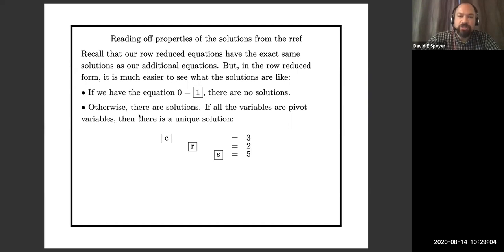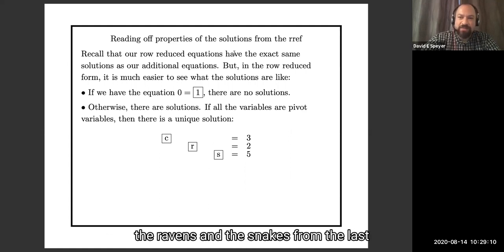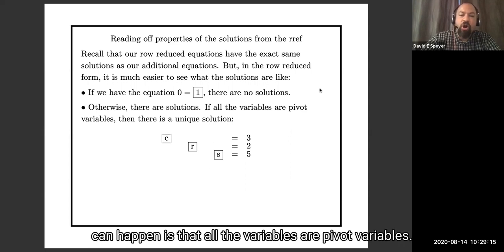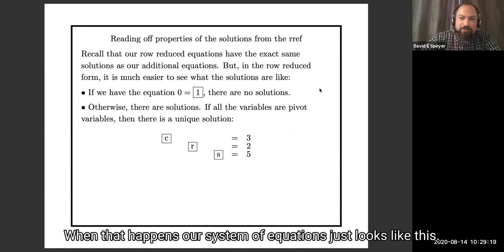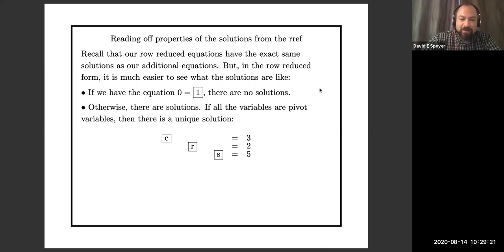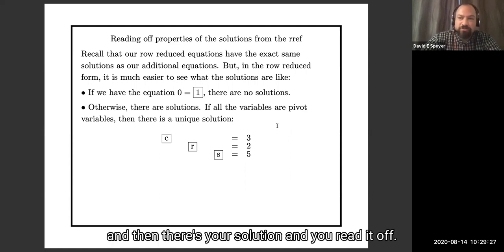Otherwise, there are solutions. Now, the simplest thing that can happen, and what happened with my example of the cats, the ravens, and the snakes from the last lecture, is the simplest thing that can happen is that all the variables are pivot variables. When that happens, our system of equations just looks like this. Yes, each equation just says one of the pivot variables is equal to some constant, and then there's your solution, and you read it off.